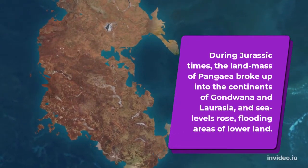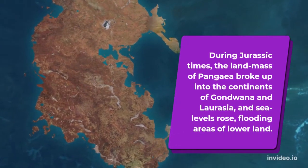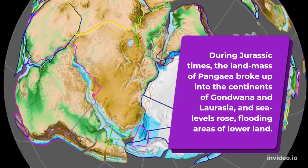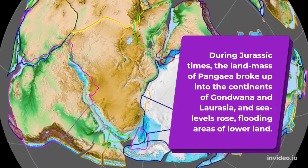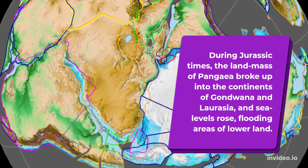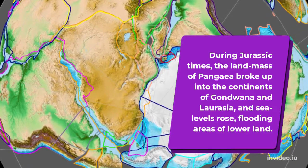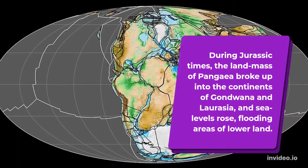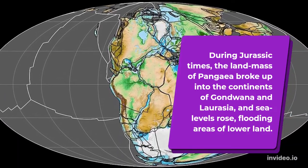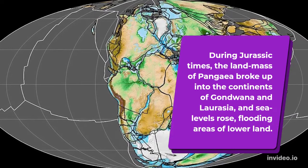During Jurassic times, the landmass of Pangaea broke up into the continents of Gondwana and Laurasia, and sea levels rose, flooding areas of lower land.